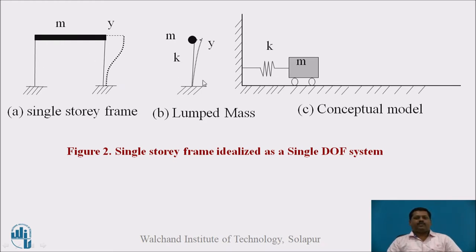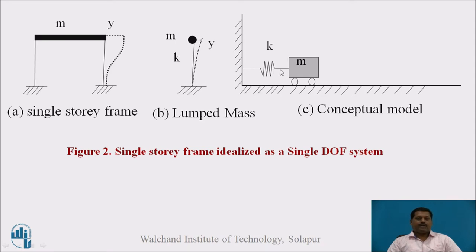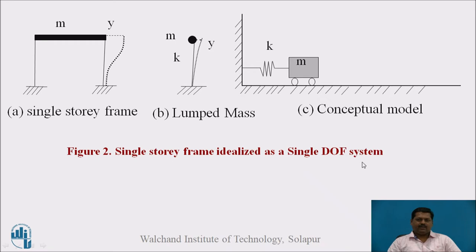This single story building is converted into a lumped mass system — the entire mass is lumped at the top. K is the stiffness representing the two columns, and y is the displacement at the top of the system. This lumped mass system is further converted into a conceptual model, also called the wagon wheel model, where the mass sits on a spring representing the stiffness of the columns. The single story frame is thus idealized as a single degree of freedom system, since there is only one mass.